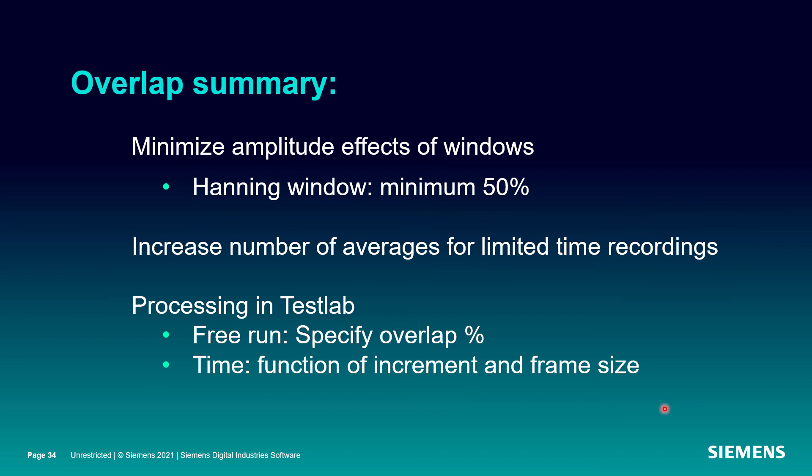So to sum up, we use overlap to minimize the effect of windows. If I'm doing a stationary averaging, I want to have a 50% overlap at a minimum. If I'm doing some tracked processing or some moving frequency content, I might want to consider boosting that up to 75, 90, 99% to make sure I'm capturing that amplitude consistently throughout my sweep. Overlap also helps me increase the number of averages for a limited number of seconds in my time recording. And in test lab, free run allows me to specify that overlap percentage directly. If I select time or taco, my overlap is going to be a function of that increment and then the frame size or the observation window that I select based on my frequency resolution. Hope that helps.